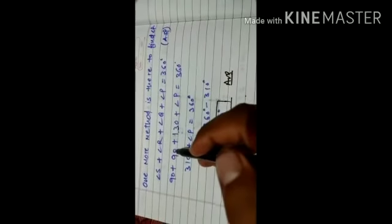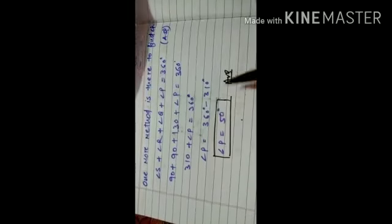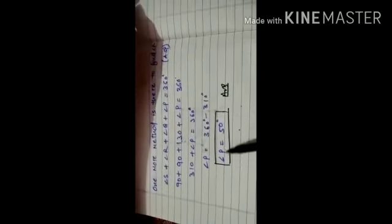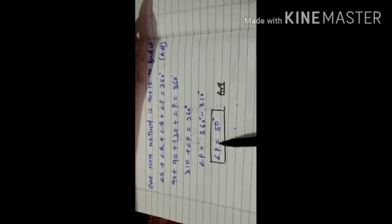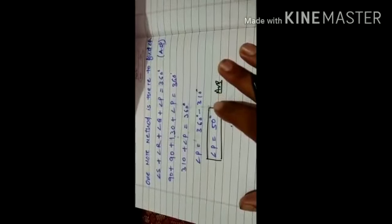Now we know that 90 plus 90 plus 130 plus angle P is equal to 360 degrees. 90, 90, 180, 180 plus 130, 310. 310 will go to the right side, then we will get angle P is equal to 50 degrees. This is the second method we can find angle P.